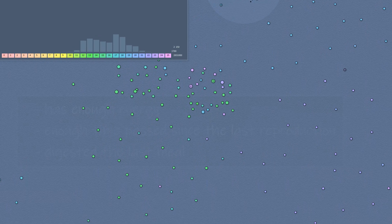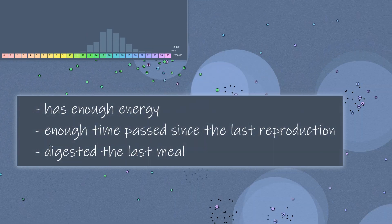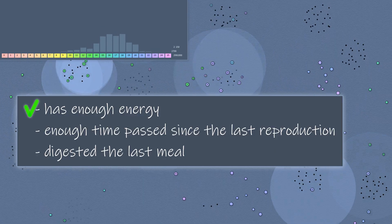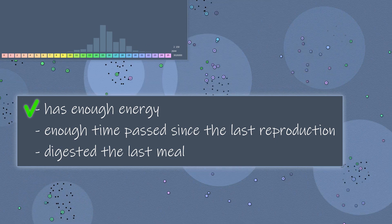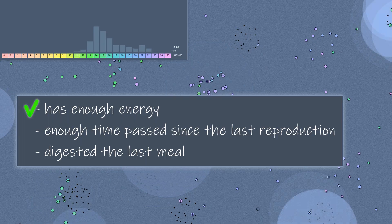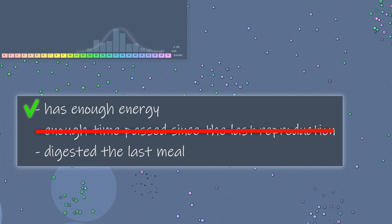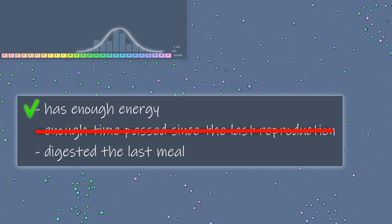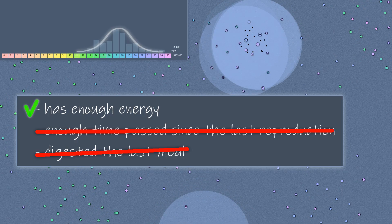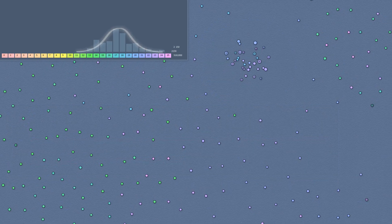There were three rules under which a bot could leave offspring. The first rule: there must be sufficient energy — the bot must provide energy to the offspring and retain enough for itself. We keep this rule. The second rule: a specified interval of time must pass between acts of producing offspring — we remove this rule. The third rule: a bot cannot reproduce on a full stomach — we also remove this rule. The last two rules were necessary to prevent uncontrolled reproduction when a bot encountered prey. Now we have lifted this restriction.